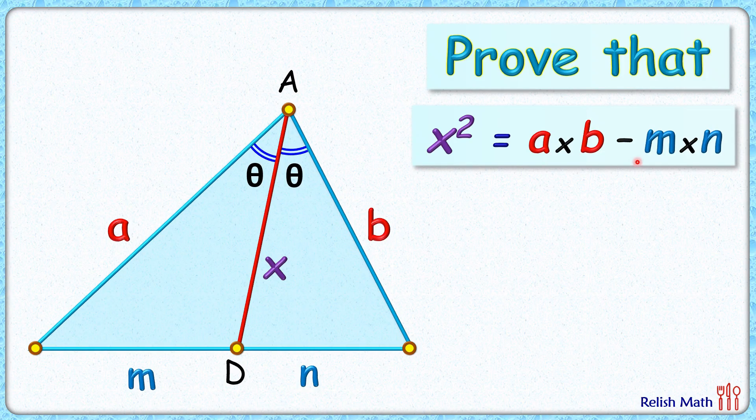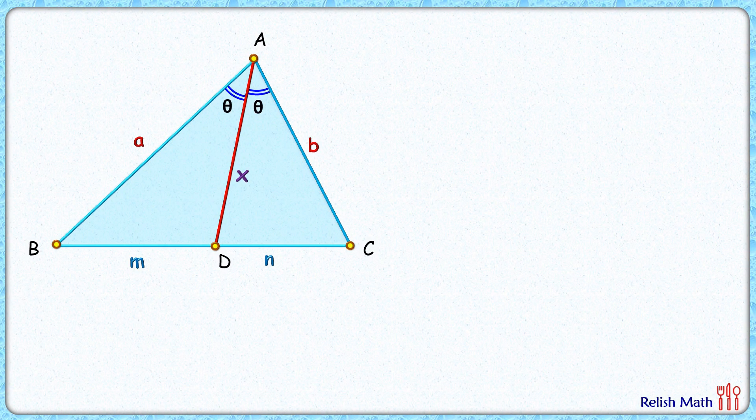And m and n are the lengths in which the opposite side is divided by this angle bisector. Let's check the proof of it. Let's check this really interesting solution and start by drawing a circumcircle.